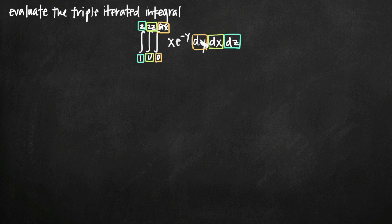We're going to start with y. When we integrate with respect to y, we want to treat y as the variable and hold all other values as constant. In this case we have x e to the negative y. We treat y as the variable but treat x as a constant — picture x as just a constant coefficient on e to the negative y.